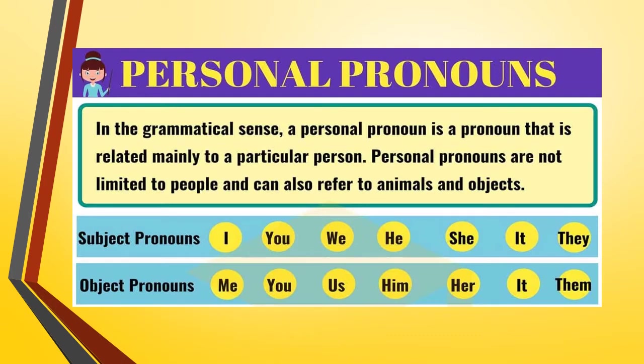Personal pronouns. Isn't the name itself very clear? Personal — something that belongs to a particular person. In the grammatical sense, a personal pronoun is a pronoun that is related mainly to a particular person. Personal pronouns are not limited to people and can also refer to animals and objects. This is the most common type of pronoun that we have learnt in our lower classes as well. For example: I, you, we, he, she, it, they, me, you, us, him, her, it, them.